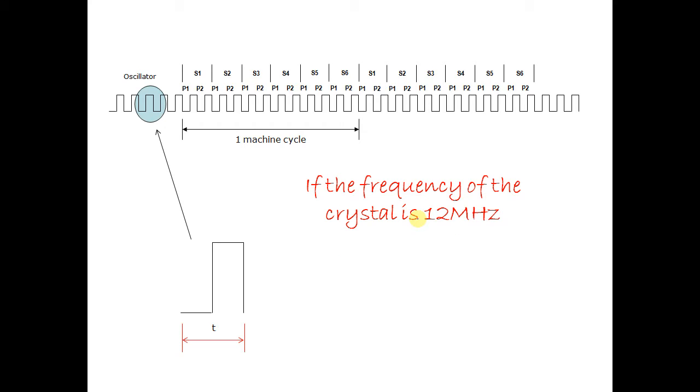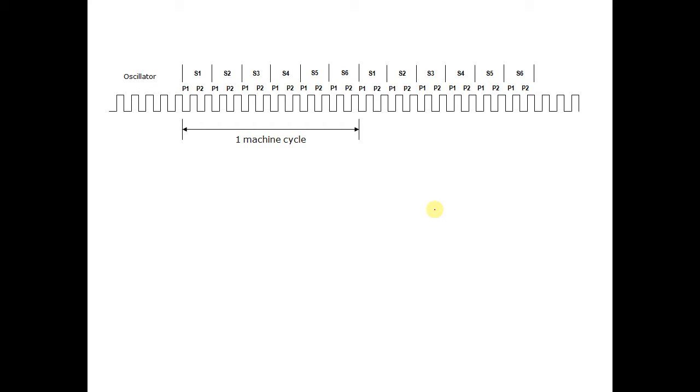If the frequency of the crystal is 12 MHz, the period T can be calculated. How much time is one machine cycle? Try to follow the working shown.